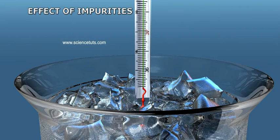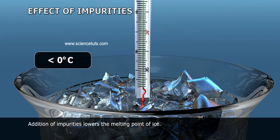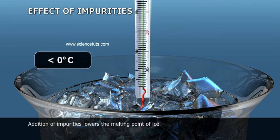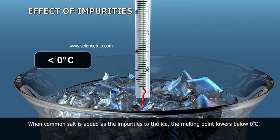Effect of impurities: Addition of impurities lowers the melting point of ice. When common salt is added as an impurity to the ice, the melting point lowers below 0 degrees Celsius.